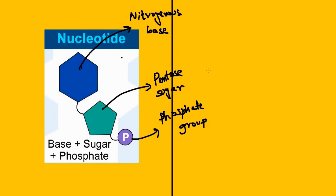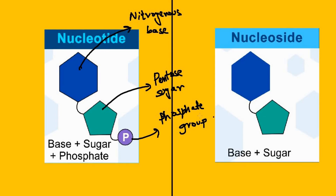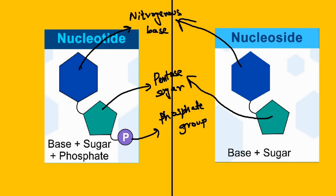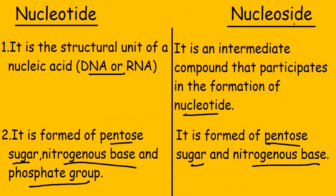For nucleoside, as you can see, the phosphate group is missing. The nitrogenous base is present and the pentose sugar is also present — the only thing missing is the phosphate group. So these were the differences between nucleotide and nucleoside.